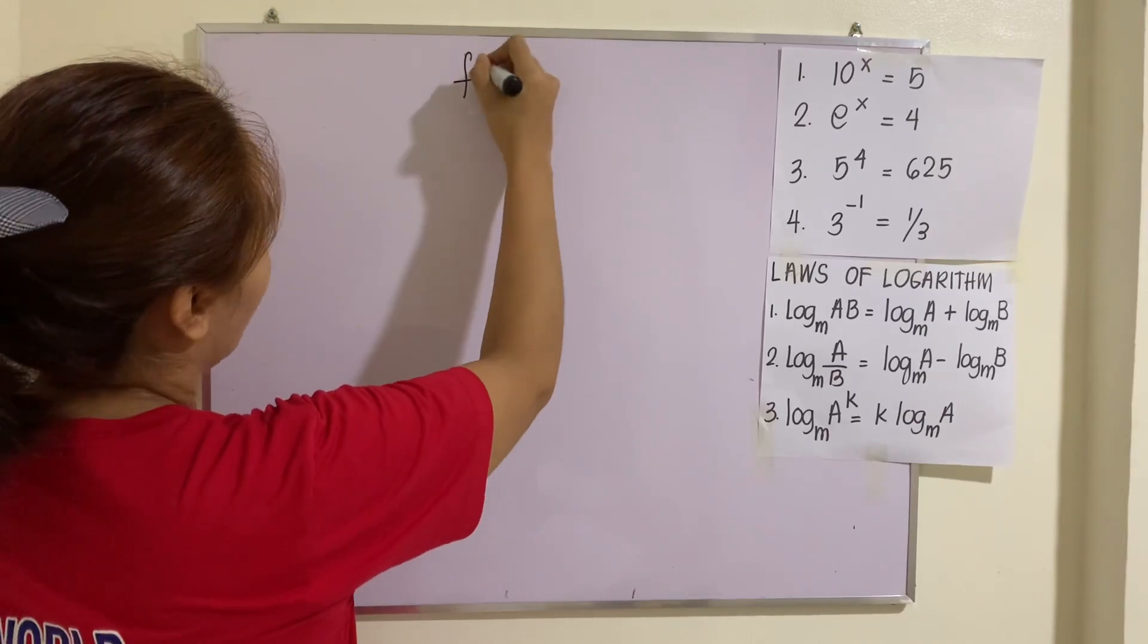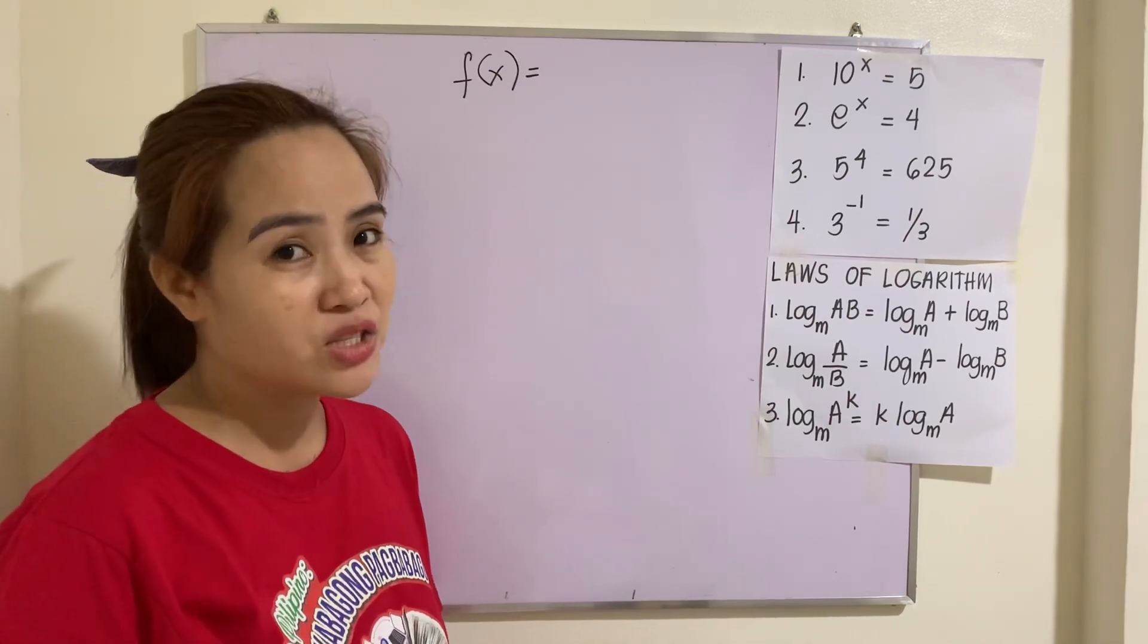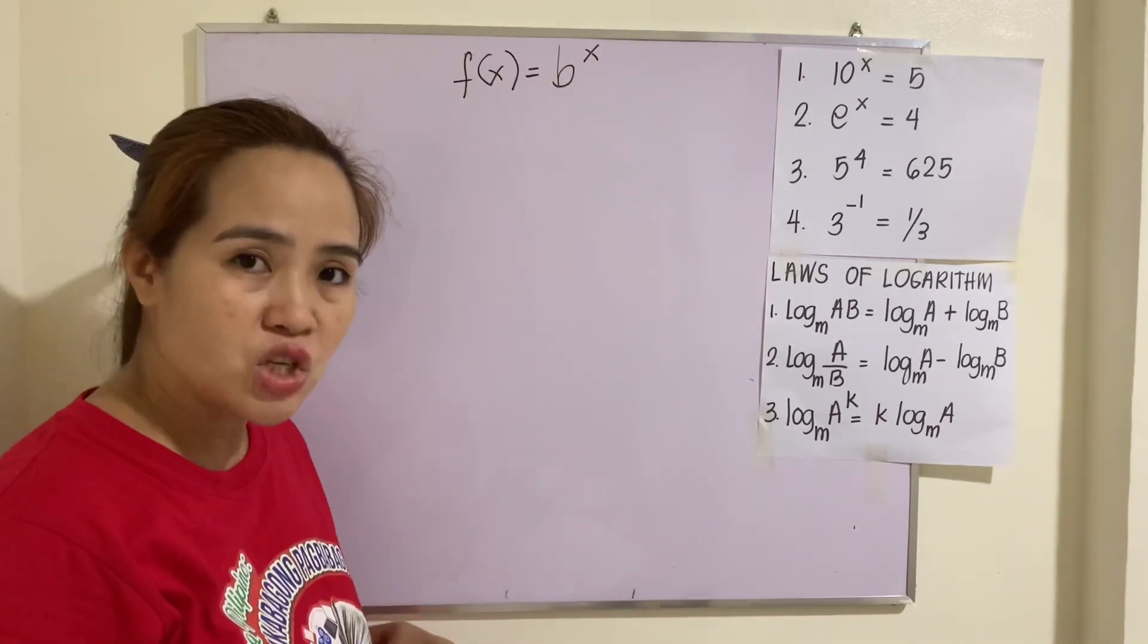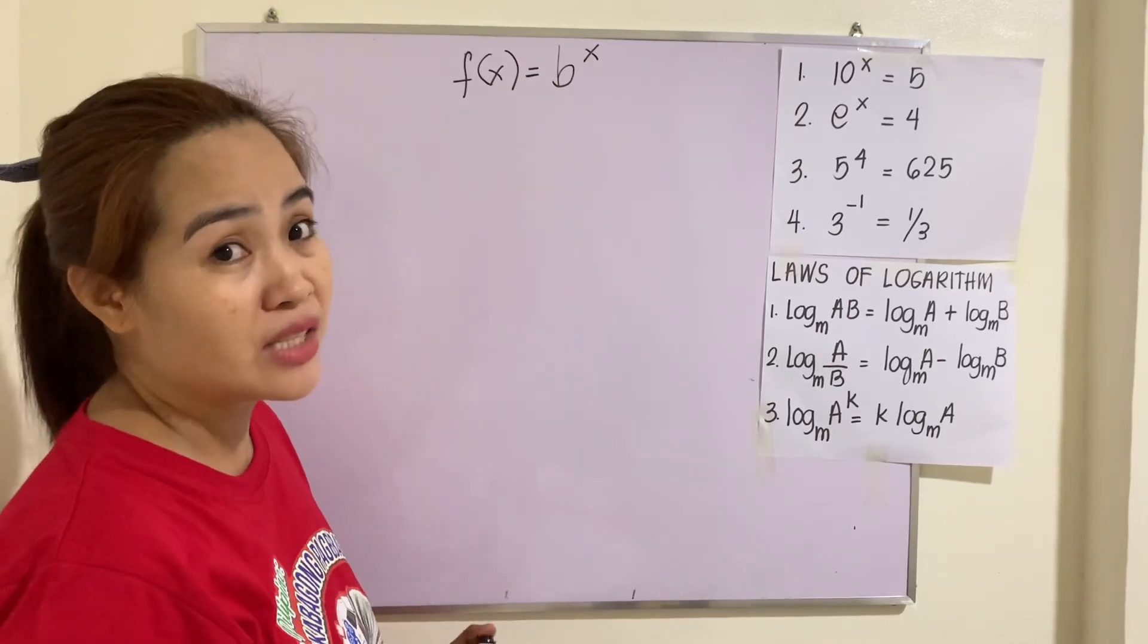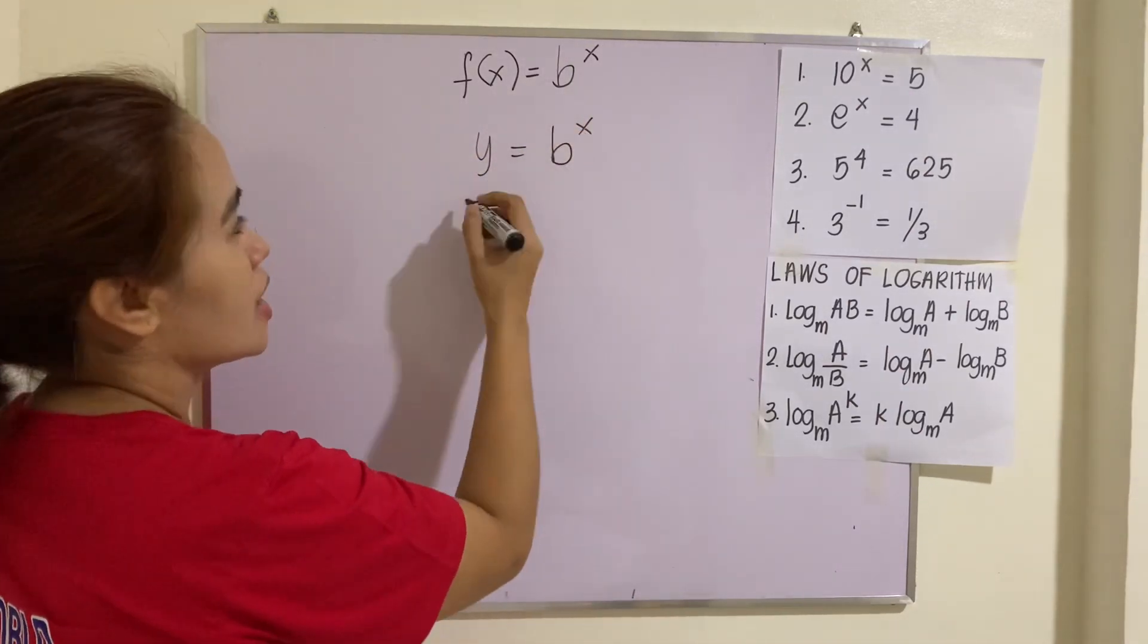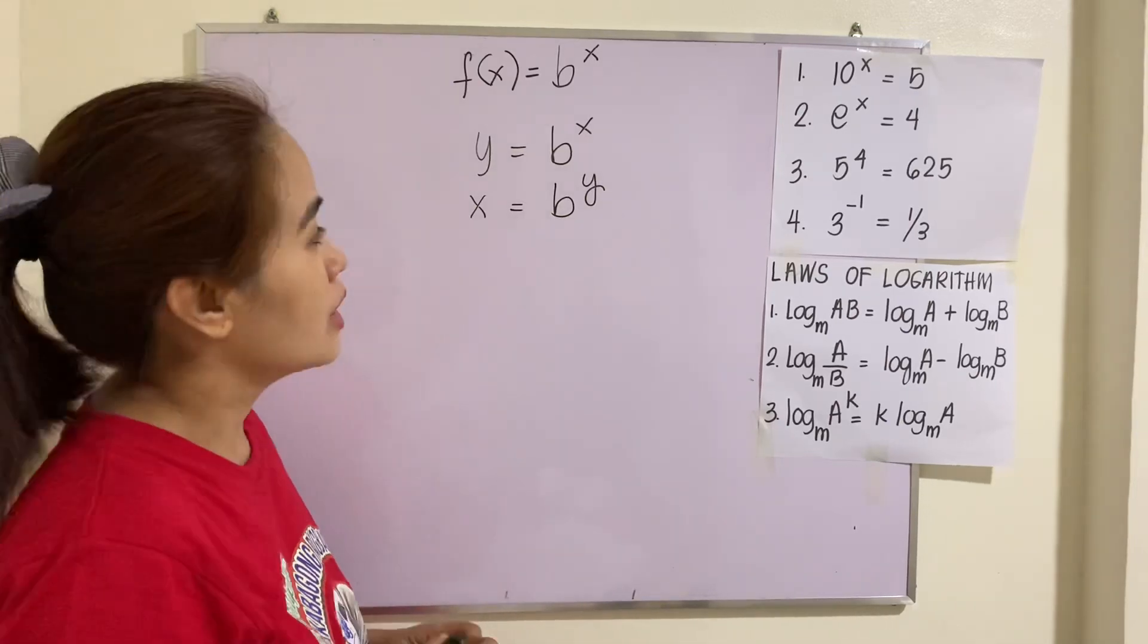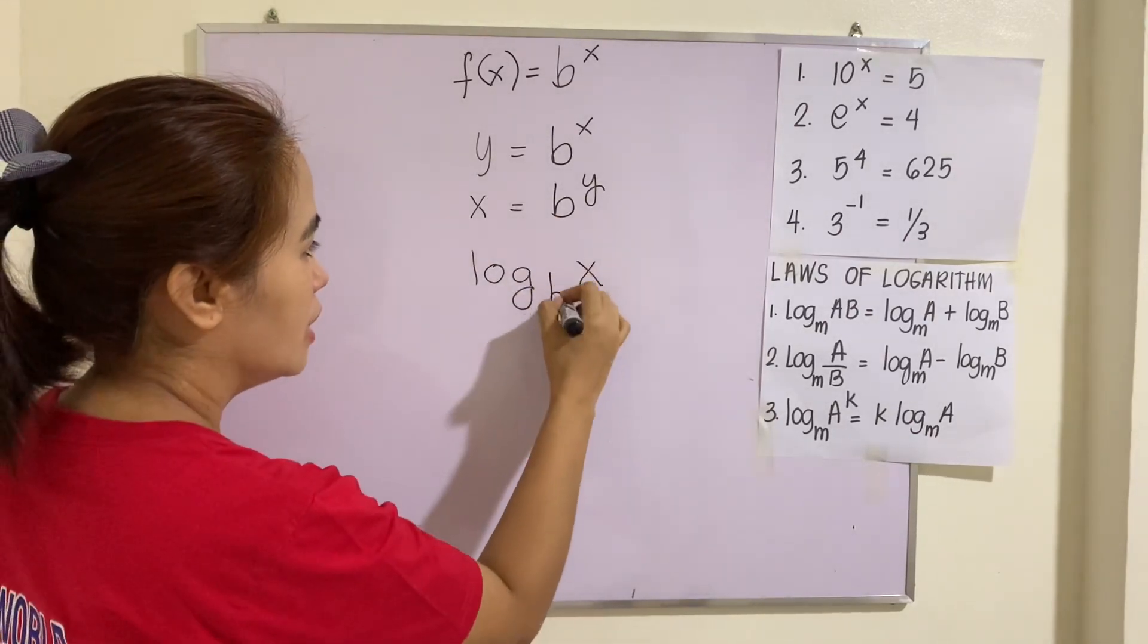We know that exponential function is the inverse of logarithmic function and vice versa. So, we have the exponential function f(x) = b^x. Remember that b should not be equal to 0 and should be greater than 1 or less than 1 but greater than 0. So, to find its inverse, we interchange x and y. That will be x = b^y. How are we going to solve for y? That is the time that logarithm comes in.